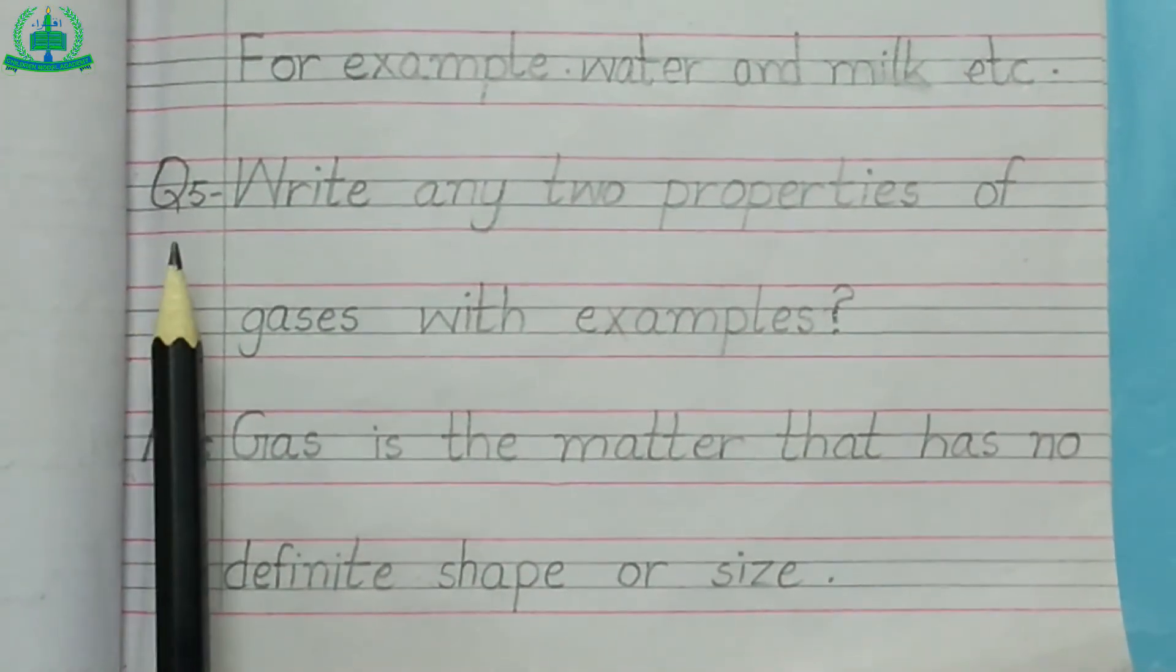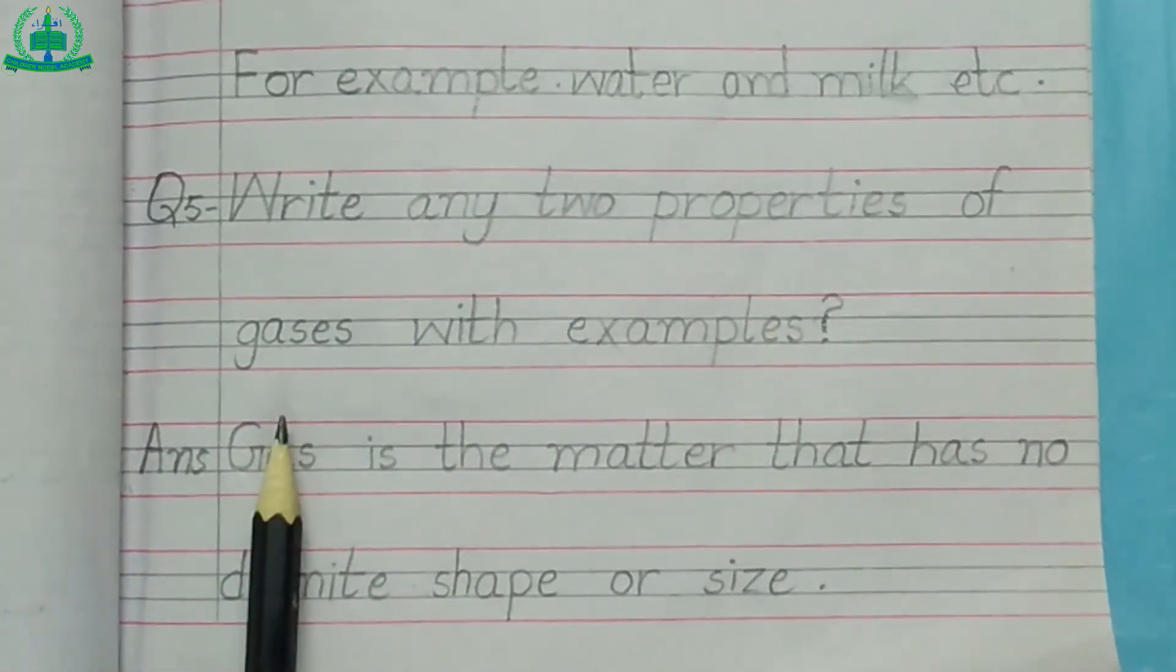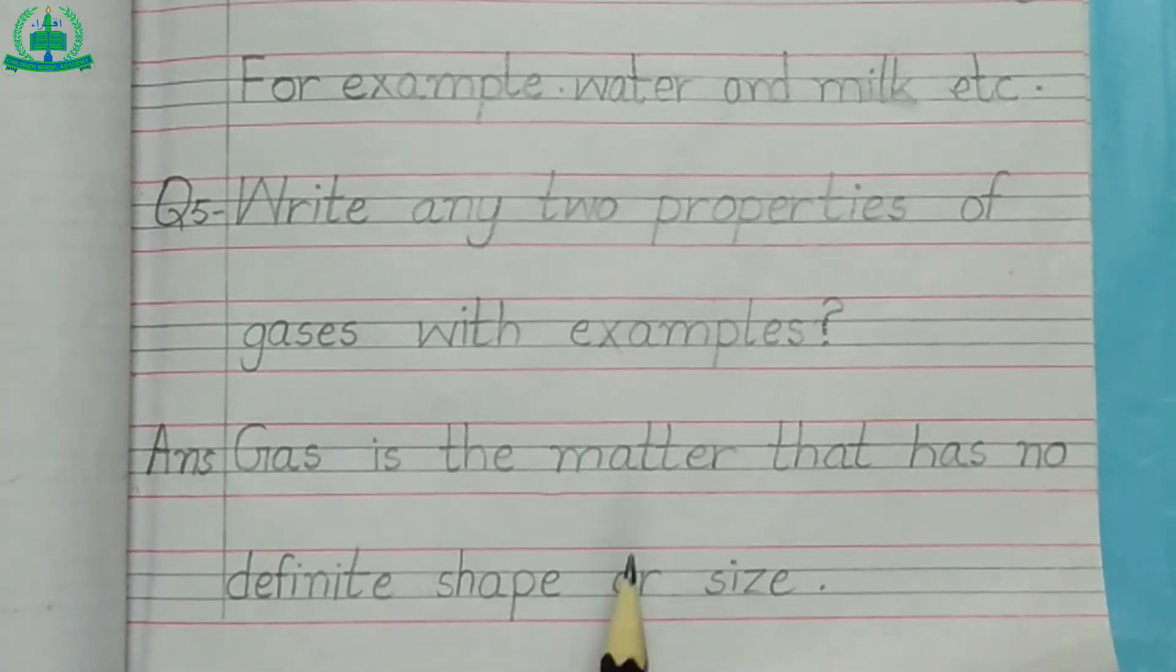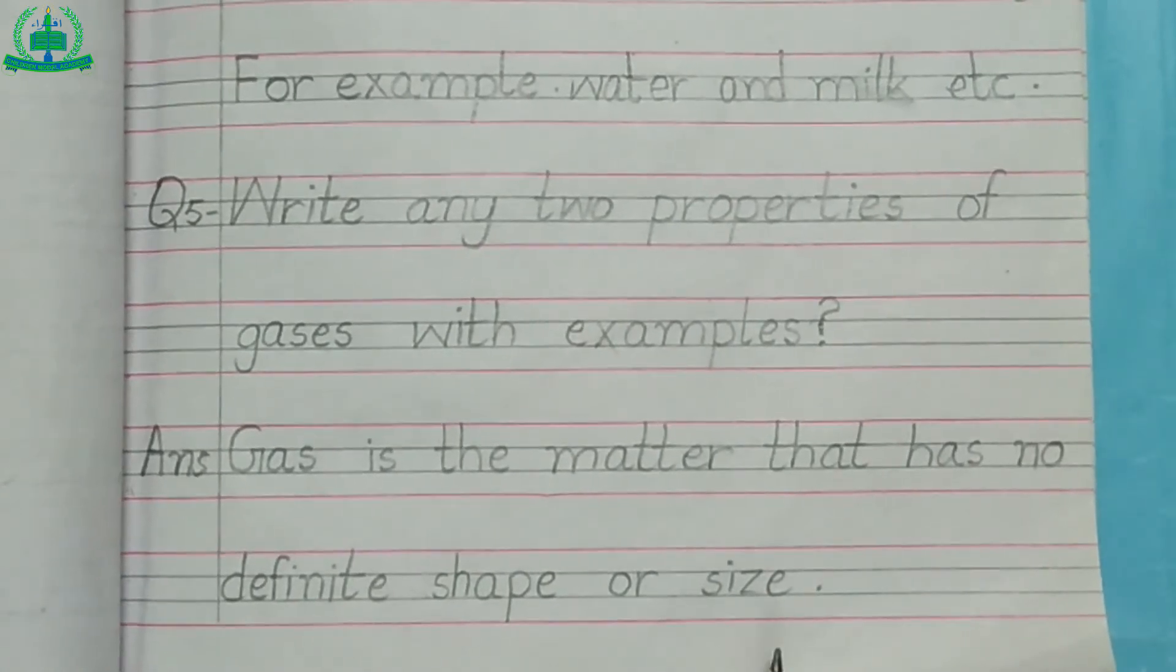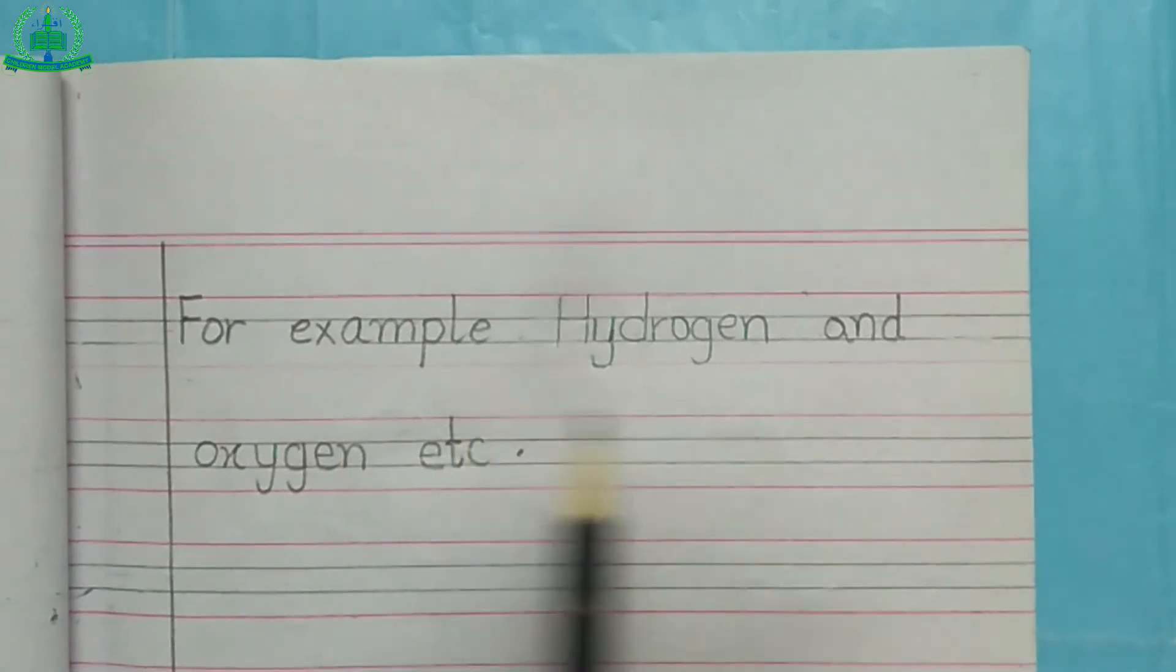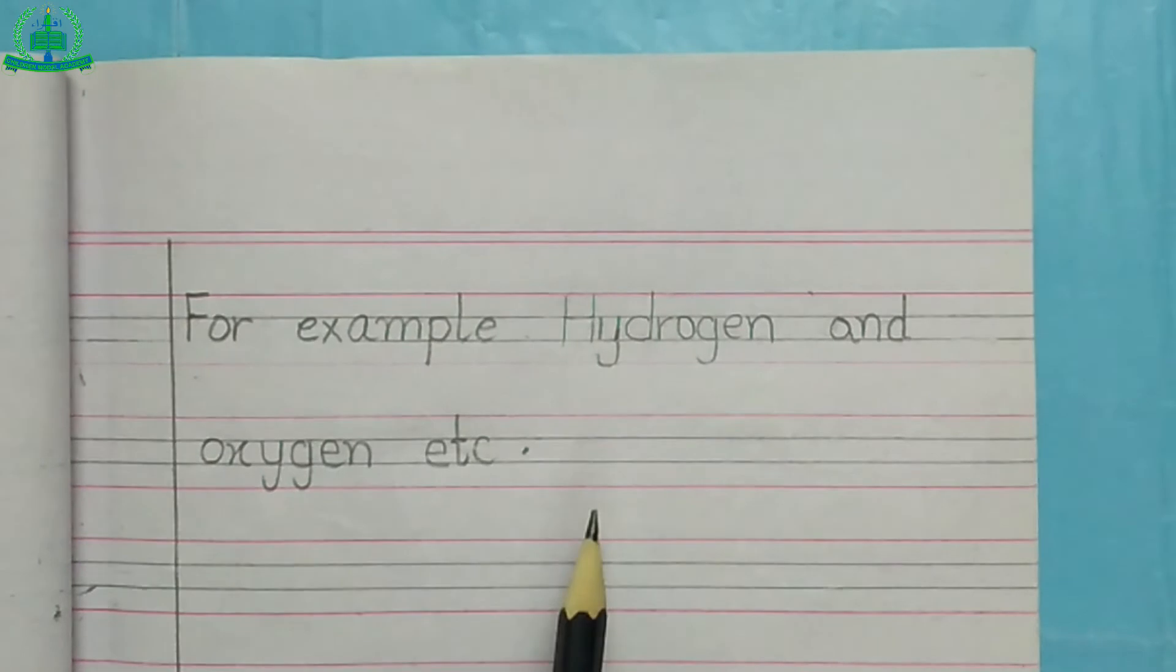Question number 5: Write any two properties of gases with examples? Answer. Gas is the matter that has no definite shape or size. For example, hydrogen and oxygen etc.